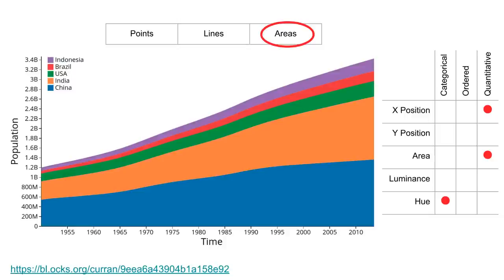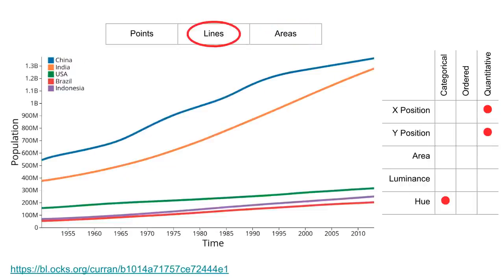Here's a similar visualization that breaks down the population of the world into the population of the top five most populous countries. In terms of channels, this represents one more attribute — a categorical attribute, namely the country — using hue. Here's another visualization of the same data using lines instead of areas.